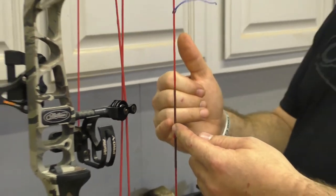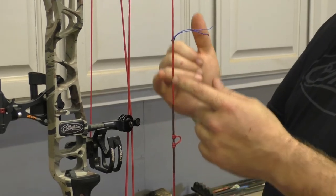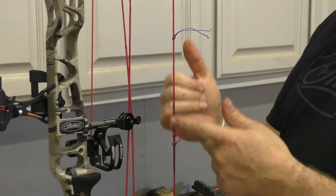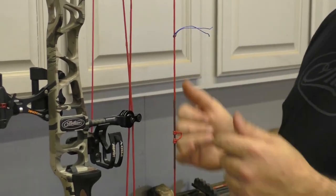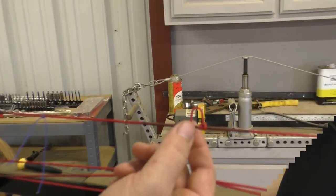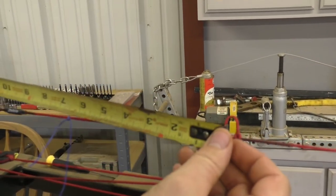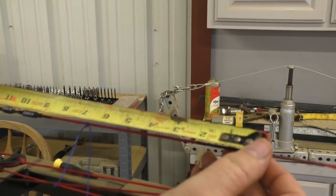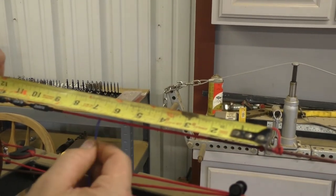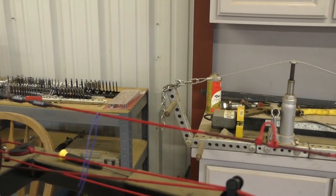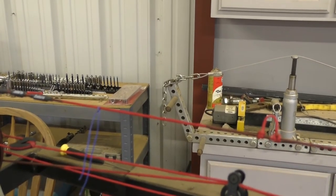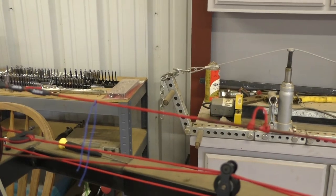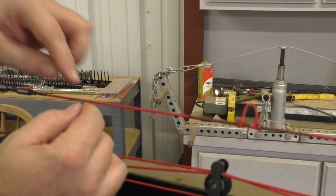Now that we have the d-loop set, before we measured up to where the little kisser button was and to the peep. So we're going to re-measure up to the peep, get it set in there, and then we'll tie a kisser on it. Since we have the d-loop in place, now we're going to measure back up to the same measurement we had before. It's almost like I pre-did that, but that's at six and three quarters right there. So I know when I put the peep in, I want the top edge of it to be about right there.